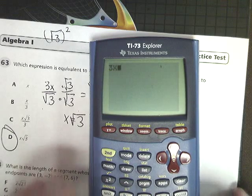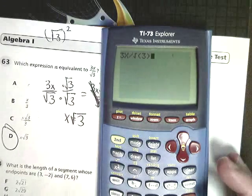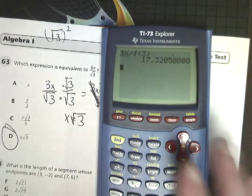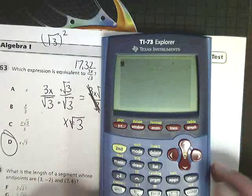And then you just do 3x divided by the square root of 3. You get 17.32. Just make a little note to yourself on your paper. And then you just go through and try all your answers.